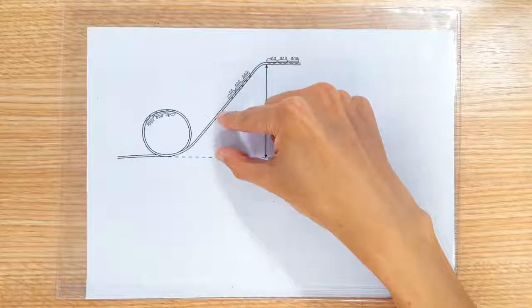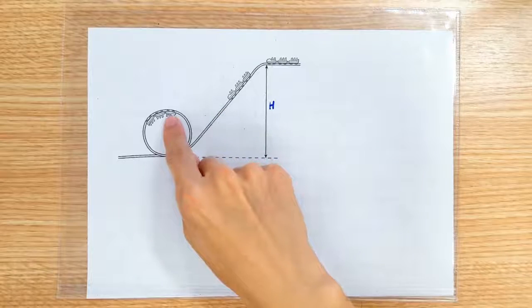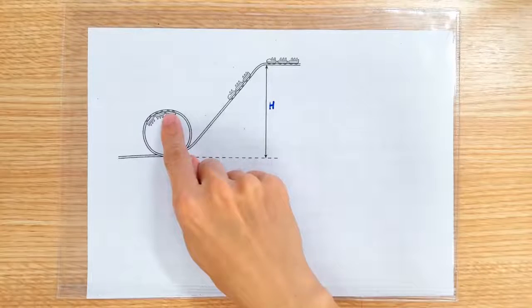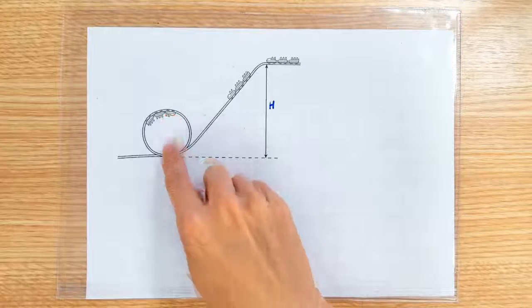If the roller coaster starts from this height then it's going to arrive at this point with zero velocity, and you know what happens if it arrives here at zero velocity? It's gonna go quack quack quack and boom straight down.